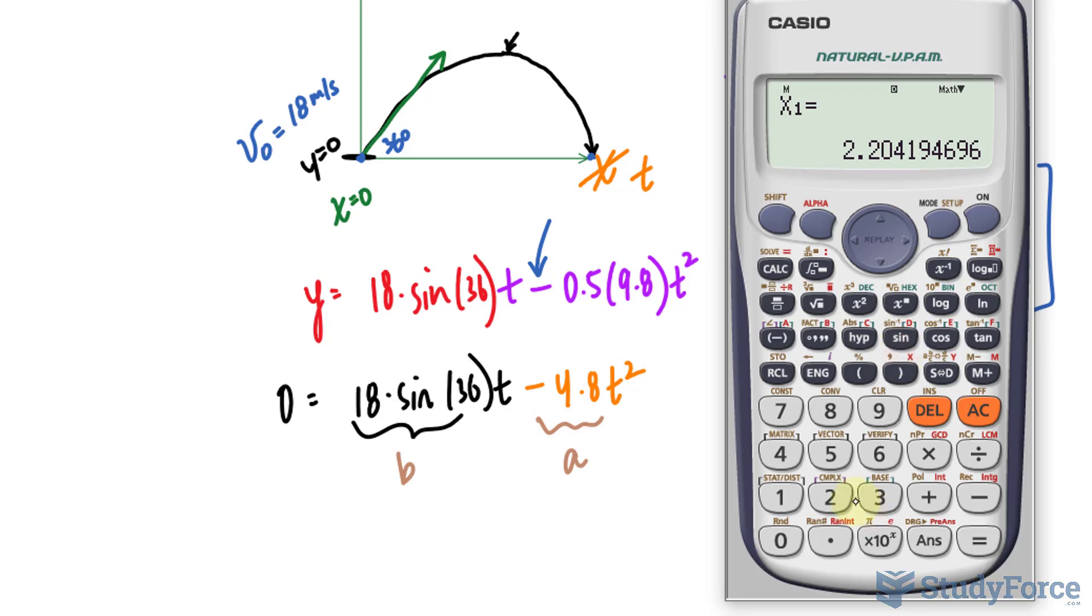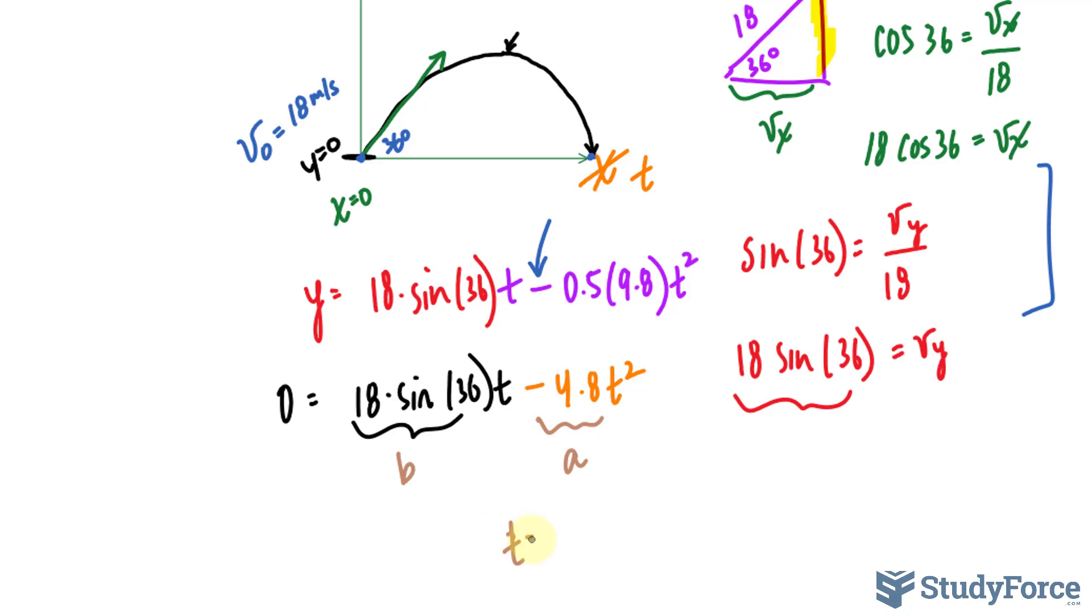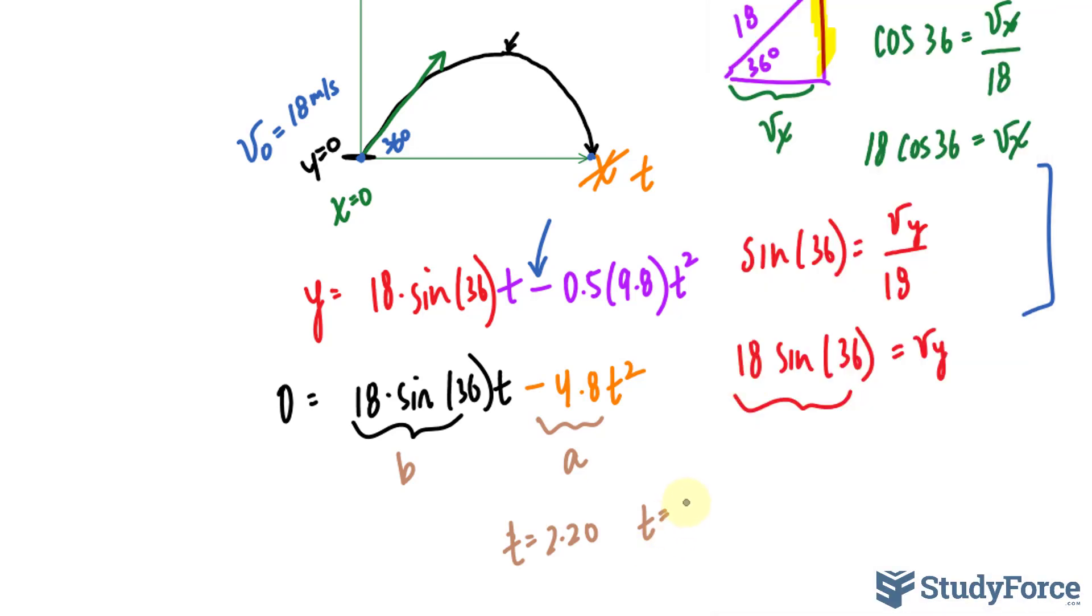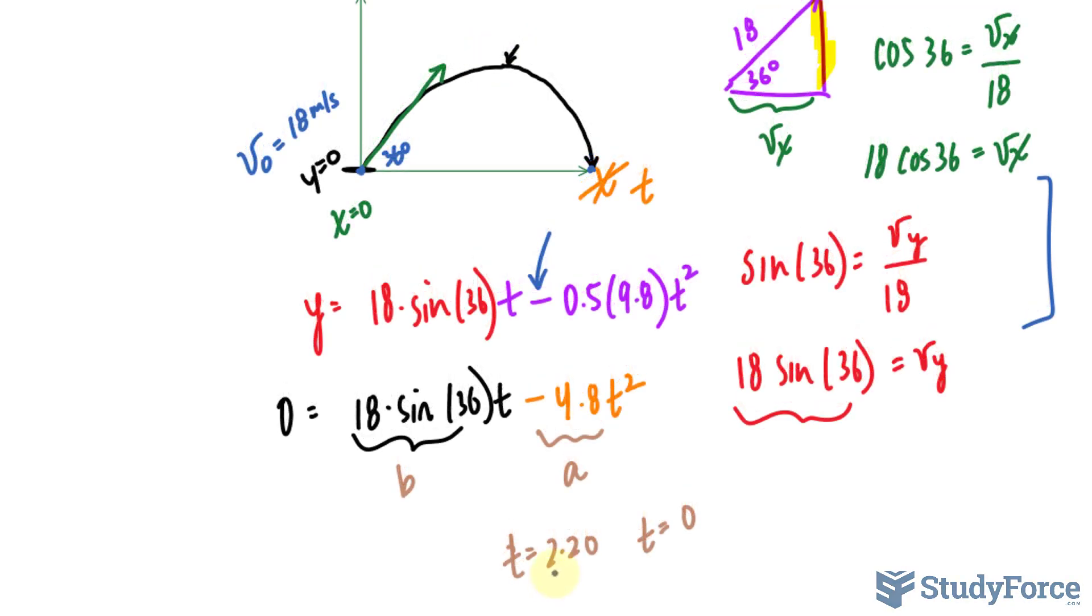We get two x values, or in our case t values, one being 2.20. So t = 2.20, and another t value that is 0. That's as expected, given what we have here. So it takes 2.2 seconds to reach the ground. To get the maximum height, we can take the average of 2.20 and 0, which is approximately t = 1.10.